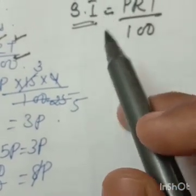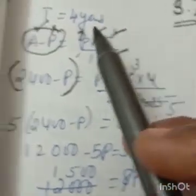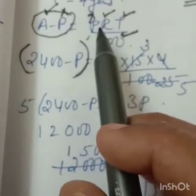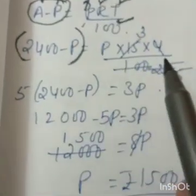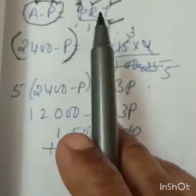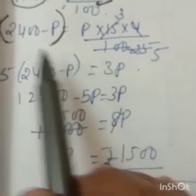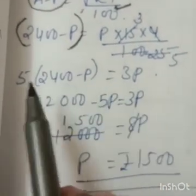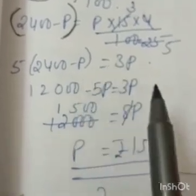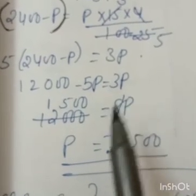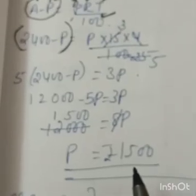Convert to one unknown: Simple Interest = Amount − Principal. Amount is known; principal is unknown; rate and time are known. Substituting the values, after cross-multiplying, 5 × 2400 and 5P moves to the right-hand side as +5P, giving 8P. After cutting, Principal = rupees 1500.